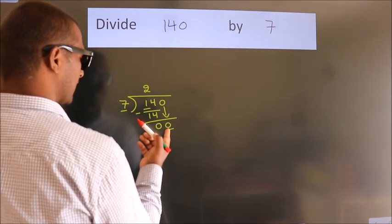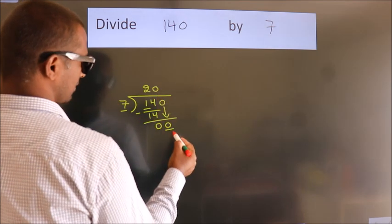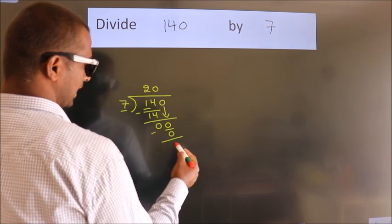When do we get 0? In the 7 table. 7 times 0 is 0. Now we subtract. We get 0.